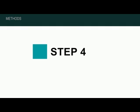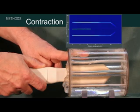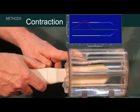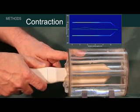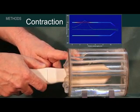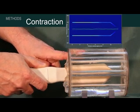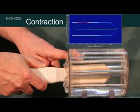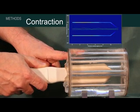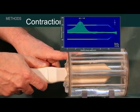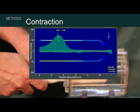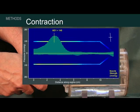Step four: pelvic floor muscle contraction. This step provides the muscle dynamic pressure responses of the pelvic floor muscle contraction recorded from opposite sides along the entire vaginal length.